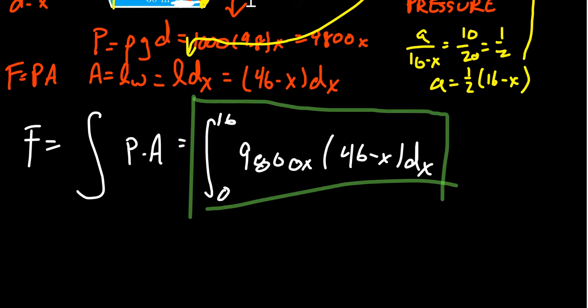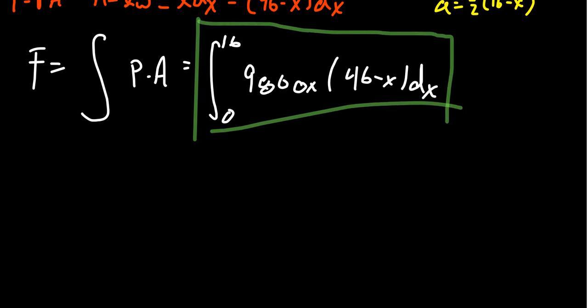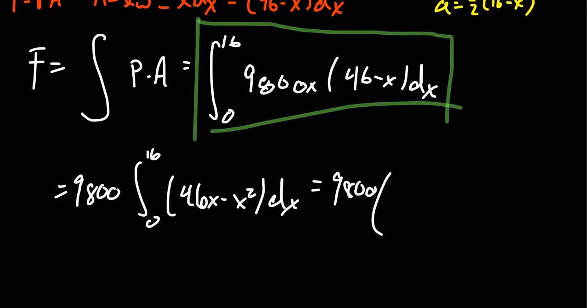Let's actually take a look at what that would be. I would factor out the 9,800 in front, distribute the x. So you're going to get 46x minus x squared dx, still going from 0 to 16. By the power rule, we're going to get, we're going to take x. We're going to raise it to x squared over 2. And then, of course, you can take half of 46 and get 23 there. 23x squared minus x cubed over 3 as you go from 0 to 16.